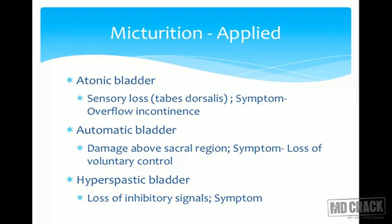The atonic bladder can occur in syphilis, in a condition called tabes dorsalis where sensory fibers are destroyed. Another condition is the automatic bladder — similar to an infant's bladder, where whenever the bladder is full, micturition occurs automatically without voluntary control. This happens with spinal cord damage above the sacral S2–S3 level, where inhibitory and facilitatory signals from higher centers are lost, and the bladder empties automatically.